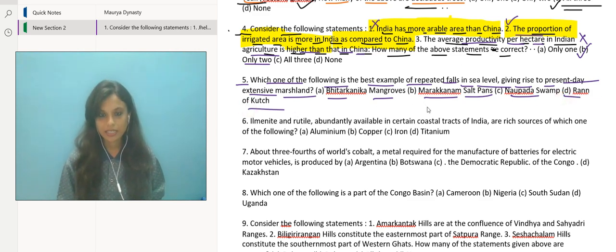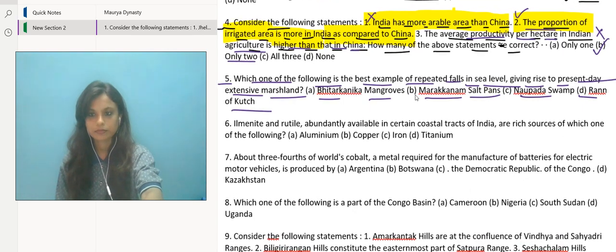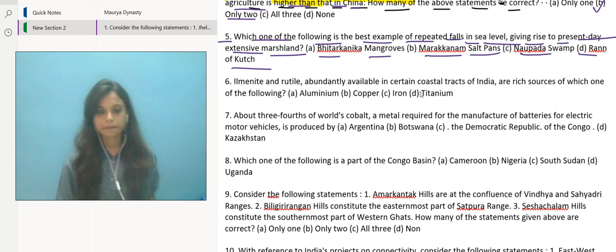Let's discuss each option. Among these options which are provided, the best example of repeated falls in sea level giving rise to the present extensive marshland would be Rann of Kutch. It is in Gujarat. Let's discuss Rann of Kutch in a bit more detail.